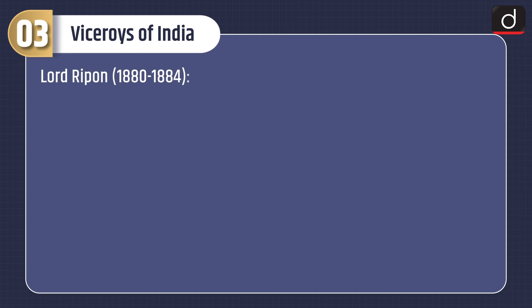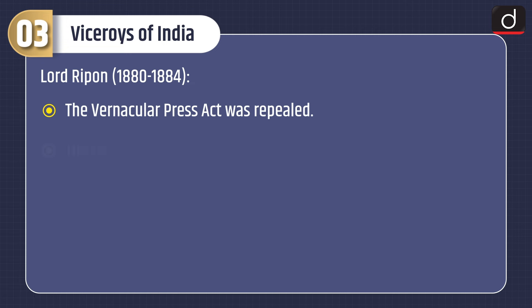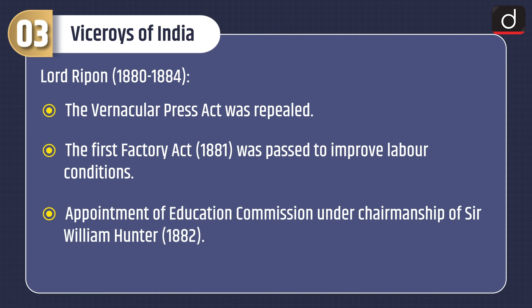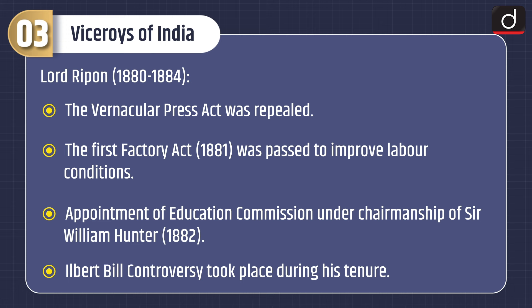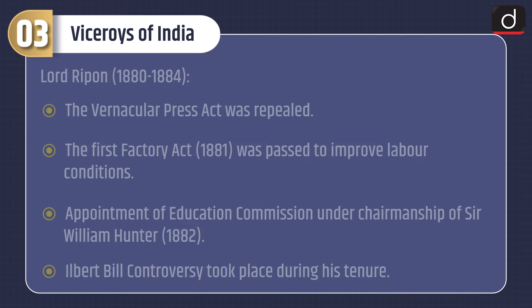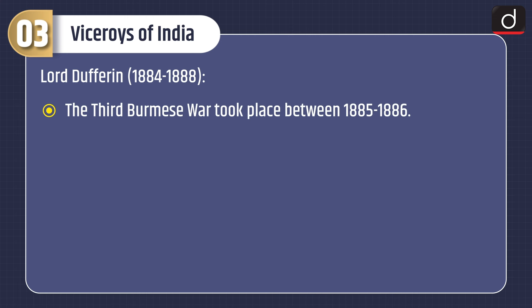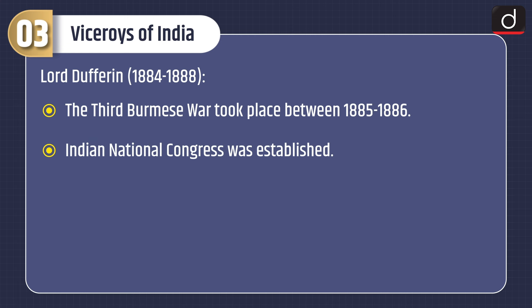Lord Ripon, 1880–1884: the Vernacular Press Act was repealed. The First Factory Act of 1881 was passed to improve labour conditions. The Education Commission was appointed under the chairmanship of Sir William Hunter in 1882. The Ilbert Bill controversy took place during his tenure. Lord Dufferin, 1884–1888: the Third Burmese War took place between 1885 and 1886. The Indian National Congress was established.